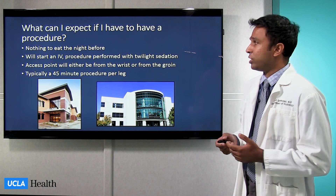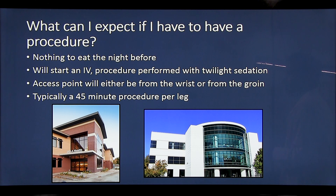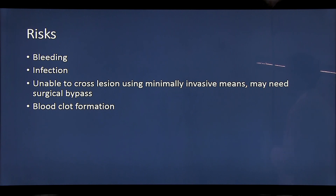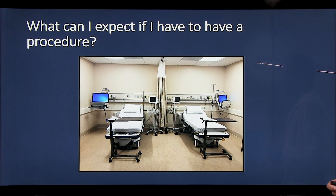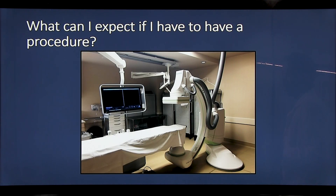So what can you expect if you're going to have a procedure? You'll have nothing to eat the night before. We'll start an IV on the day of the procedure, about an hour prior. You'll receive moderate sedation — a twilight sedation where you're sleepy and groggy but not completely out. The access point will either be from the wrist or the groin, and the procedure lasts usually about 45 minutes. The risks of the procedure include bleeding, infection, or inability to cross the lesion using minimally invasive techniques, which may necessitate performing a surgical bypass. Here's a picture of our pre-procedure area and our angiography suite, which is the live x-ray camera we use to perform your procedure.